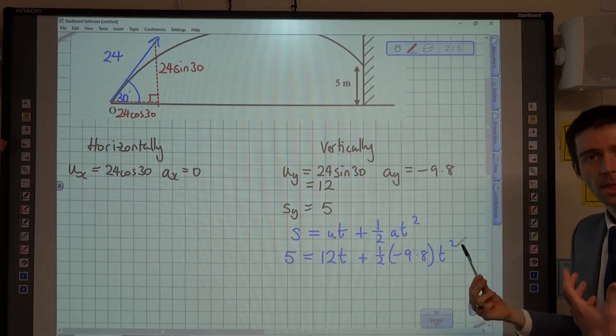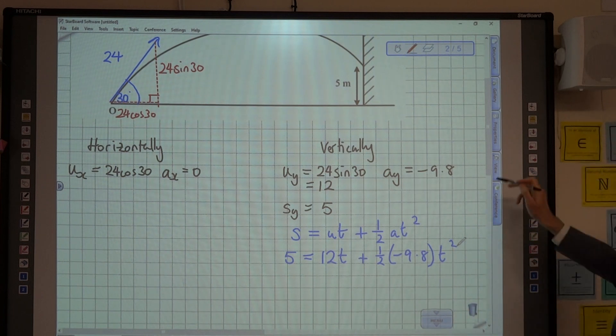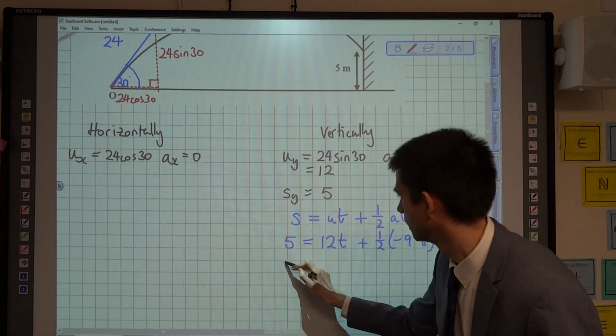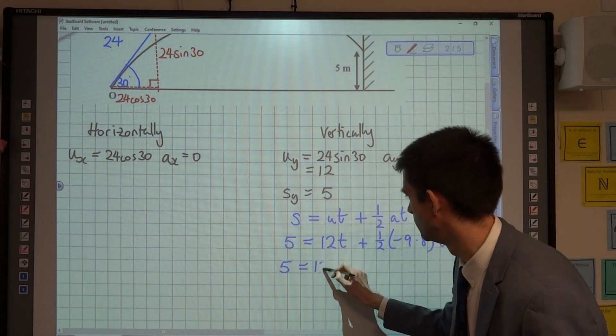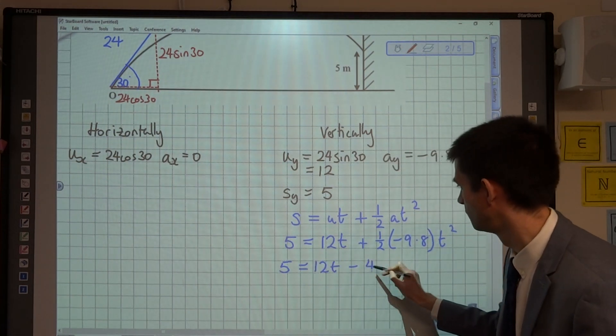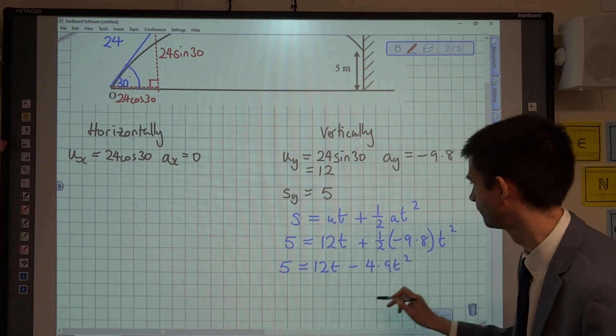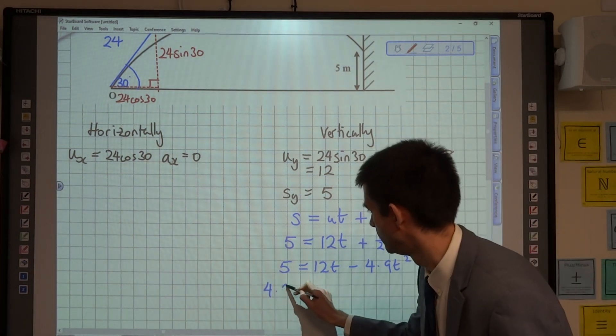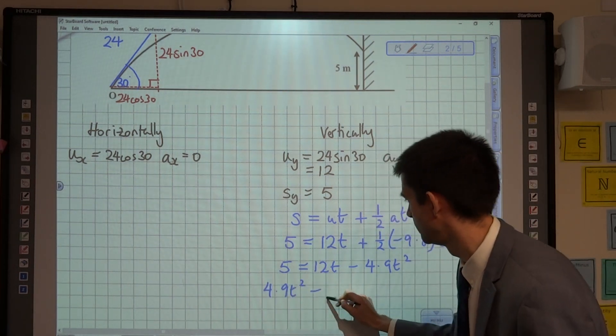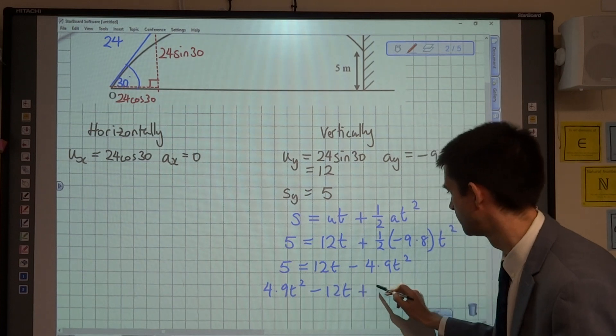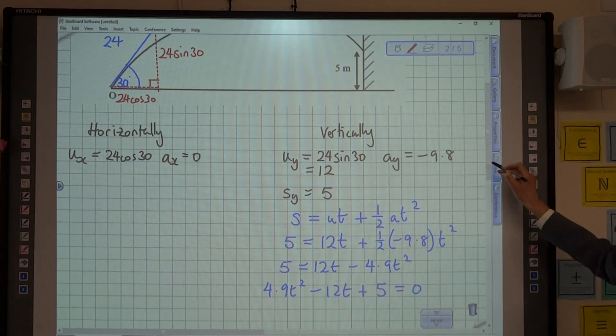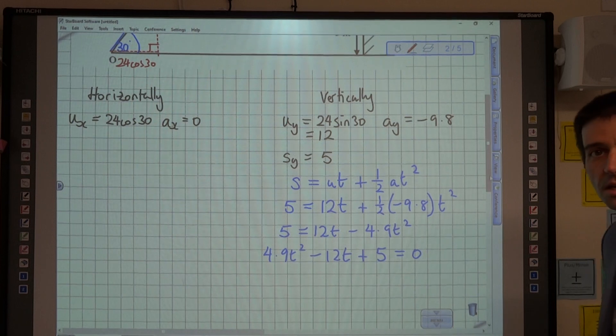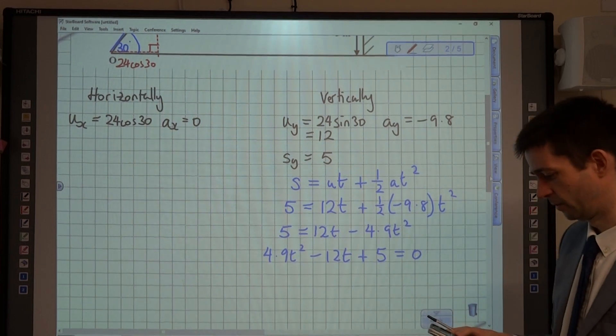So I'm going to write 12T plus a half. A is negative 9.8 and T squared. And we're going to now get a quadratic that we can solve to find T. So 5 is equal to 12T minus 4.9T squared. So 4.9T squared minus 12T plus 5 equals 0. And we can head over to the Casio to solve that for us.